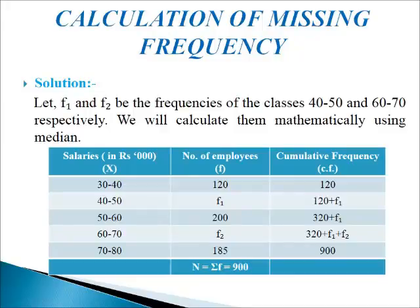In the first column, we will write the salaries, denoted by letter X. In the second column, we will write the number of employees, that is frequency, denoted by letter F. In the third column, we will write cumulative frequency, denoted by CF. Let F1 and F2 be the frequencies of the classes 40 to 50 and 60 to 70 respectively. We will calculate them mathematically using median.